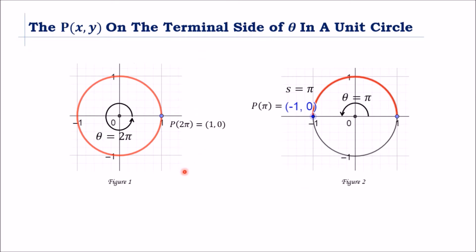Let's start with determining the point of quadrantal angles. Please take note that the values of the arc length S and the central angle theta in a unit circle are numerically equal. In Figure 1, theta rotates in one full revolution and terminates at the positive x-axis. Therefore, P of 2π equals (1, 0).